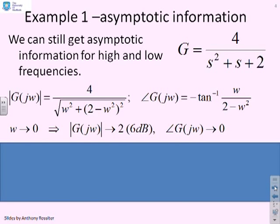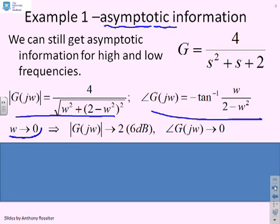Let's look at asymptotic information. We've rewritten the gain and phase expressions. First, let ω tend to 0. If ω tends to 0, clearly the modulus of G tends to 2, which is 6 decibels, and the phase tends to 0. So that asymptote is straightforward.